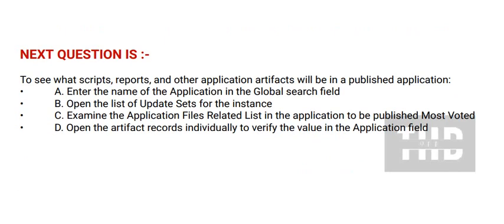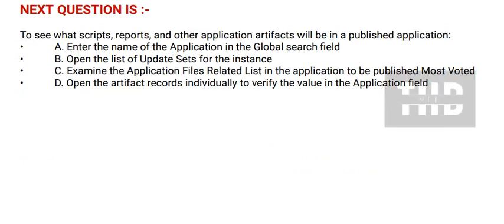Next question is: to see what scripts, reports, and other application artifacts will be in a published application — Option A: enter the name of the application in the global search field. Option B: open the list of updates set for the instance. Option C: examine the application files in the list in the application to be published. Option D: open the artifact records individually to verify the value in the application field. And the correct answer is option C.